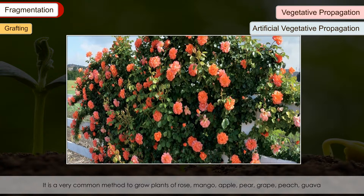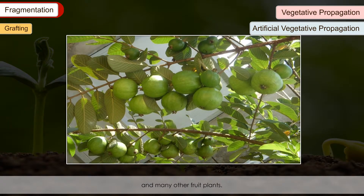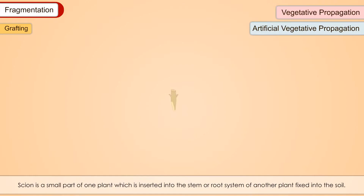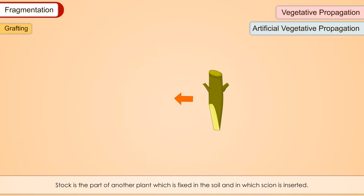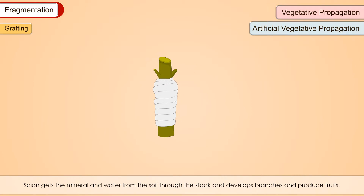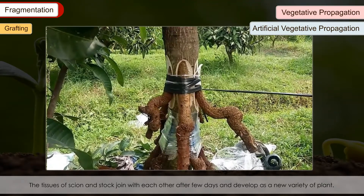Grafting: It is a very common method to grow plants of rose, mango, apple, pear, grape, peach, guava and many other fruit plants. In grafting, two different plants are joined together to produce a new plant containing the characters of both. It is carried out using a scion — a small part of one plant inserted into the stem or root system of another plant fixed in the soil — and a stock, which is the part fixed in the soil. Both scion and stock are firmly tied together; the scion gets minerals and water through the stock, and their tissues join after a few days to develop as a new variety of plant.